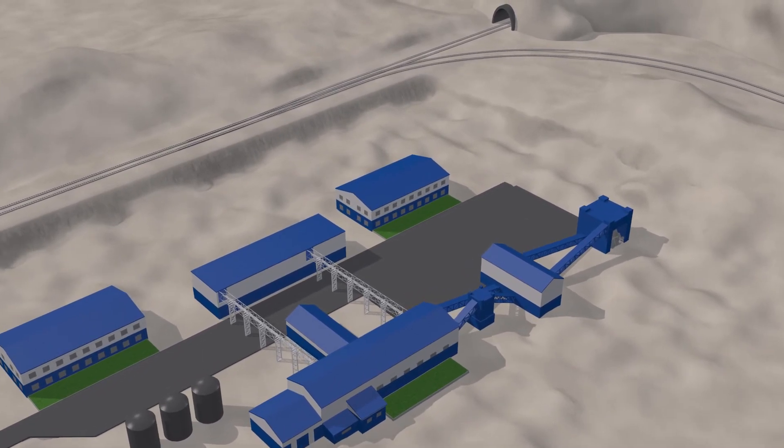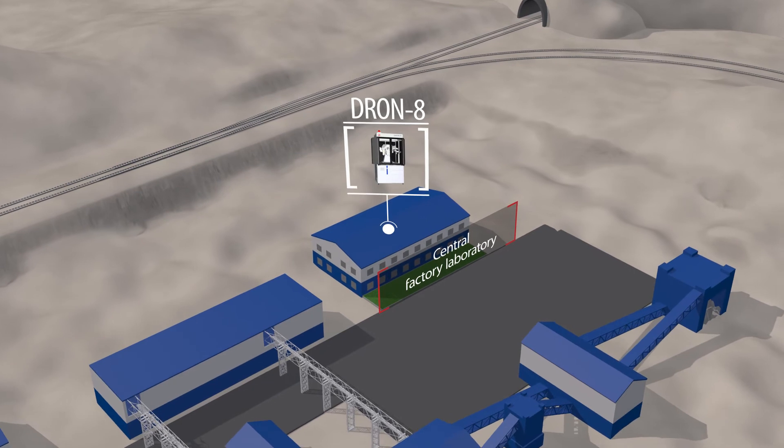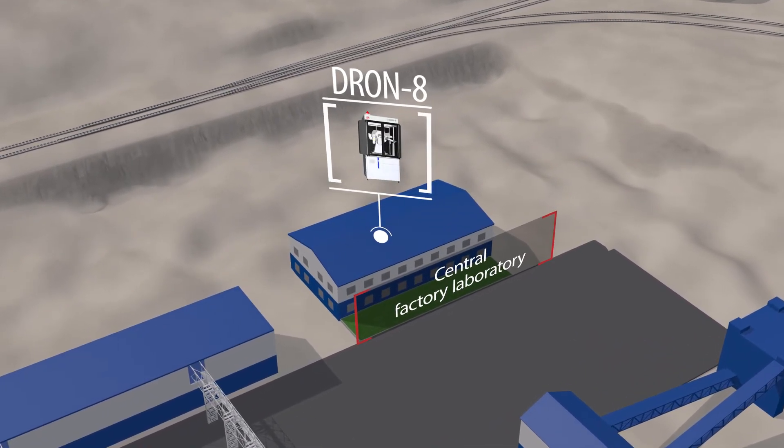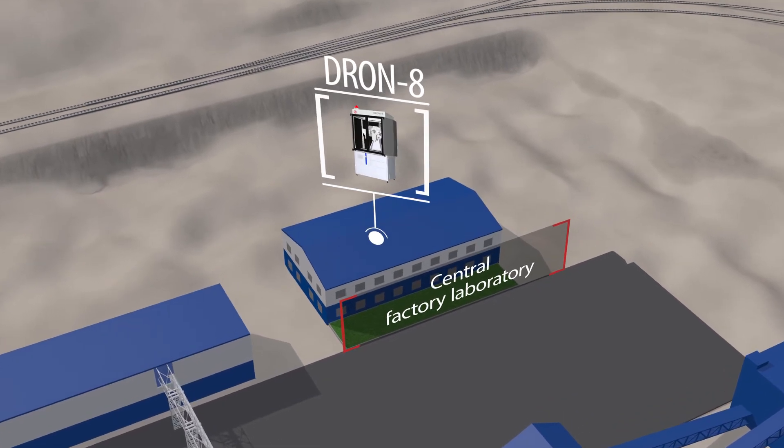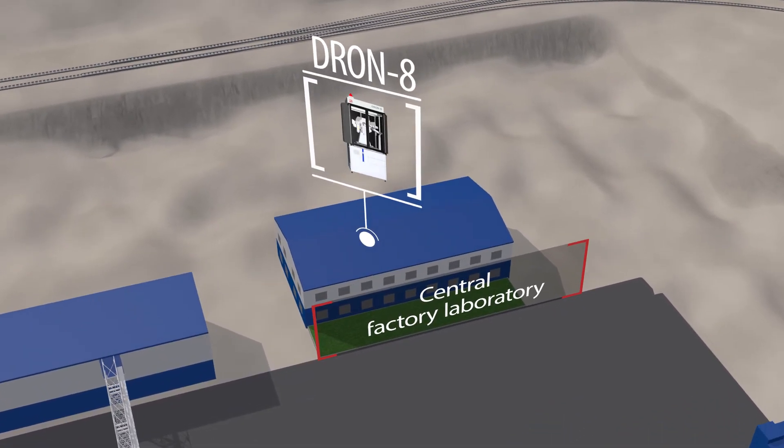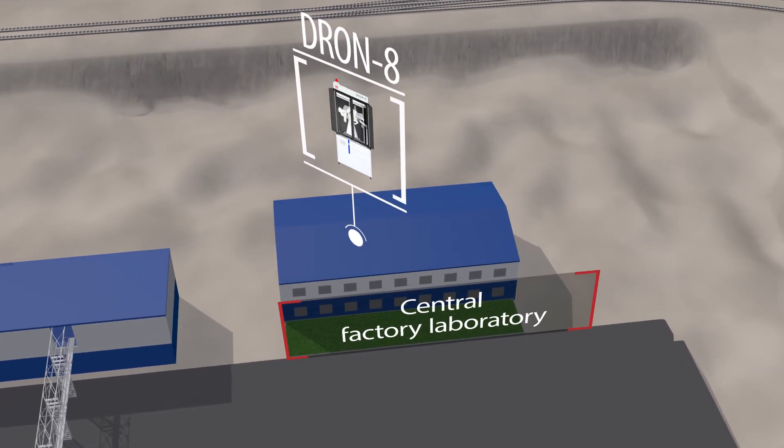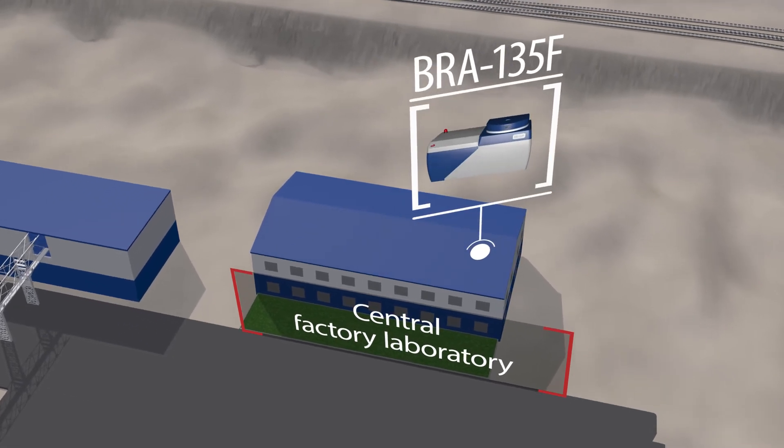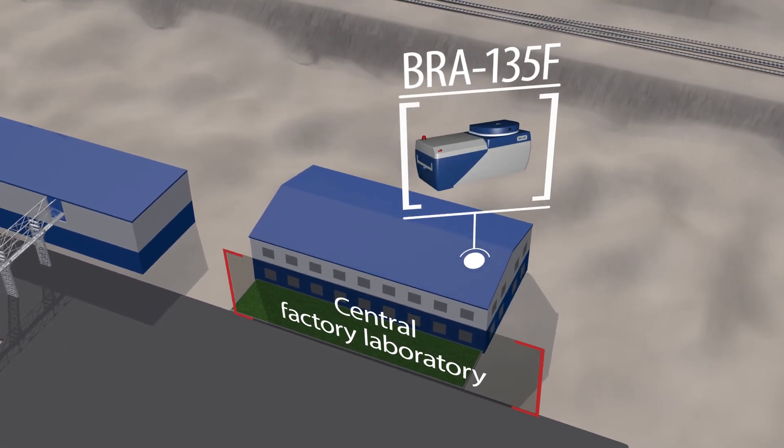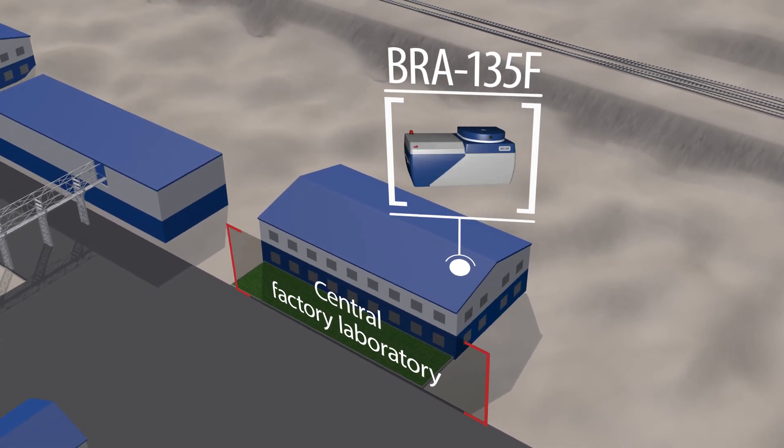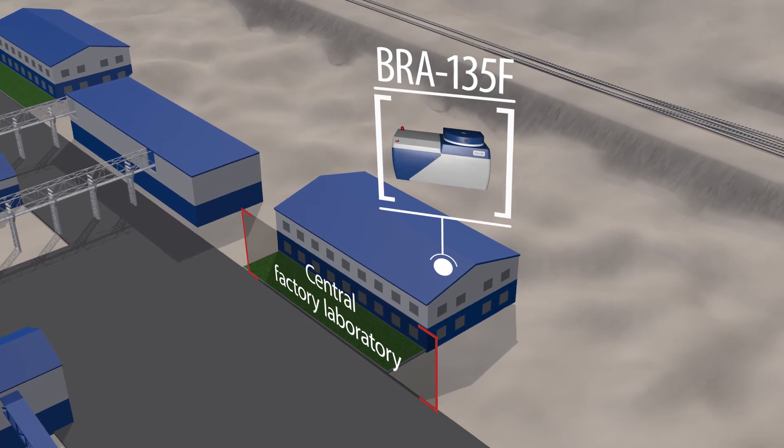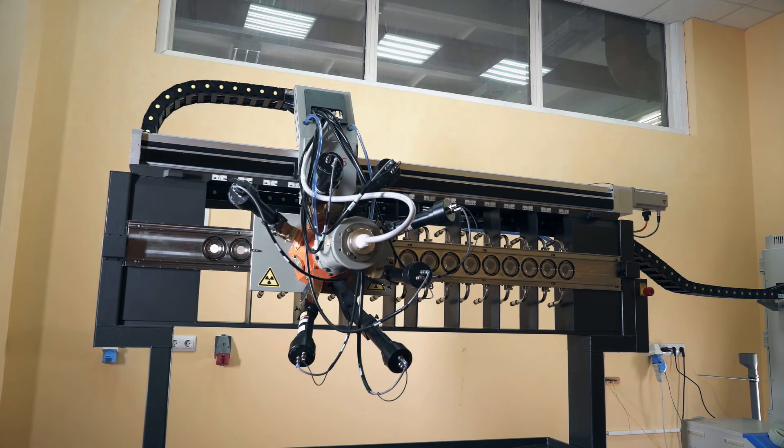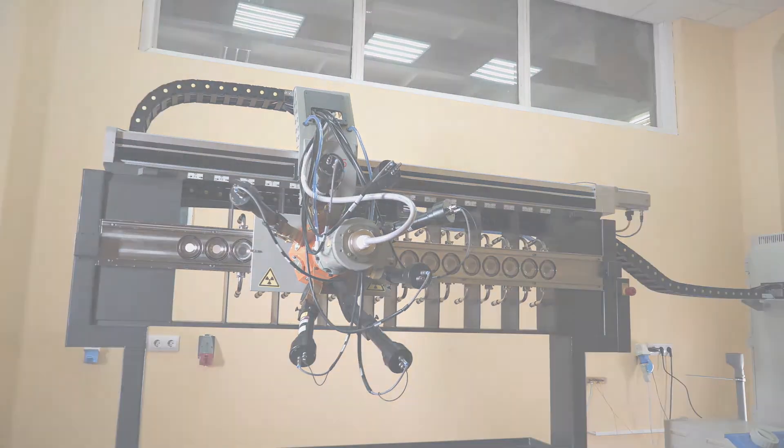For example, the x-ray diffractometer DRON, which is used for qualitative and quantitative analysis of the mineral composition of ores and in the technological process of mineral processing for phase analysis of raw materials, concentrates and tailings of mining production, and the analyzer BRA-135F, which provides simultaneous determination of all chemical elements contained in the sample from fluorine to uranium. The AR-35 on-stream analyzer is a new implementation of the time-proven solution.